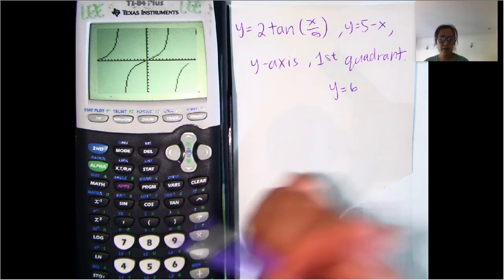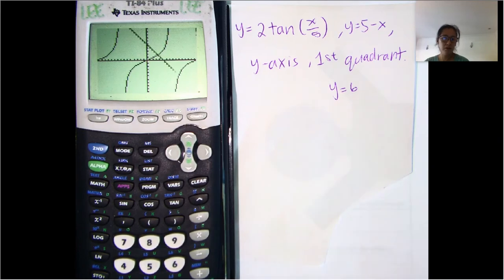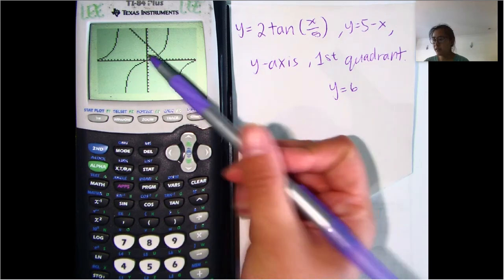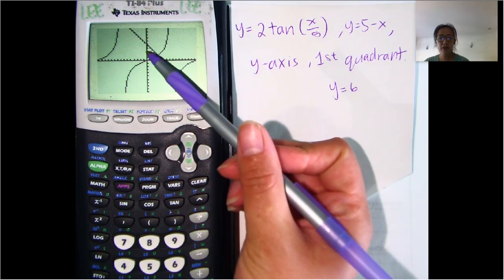And so that's Y equals 2 tangent of X over 5. And it said that line 5 minus X or Y equals 5 minus X, the Y axis in the first quadrant. So that would be this little area here. It kind of looks like a little triangle there.